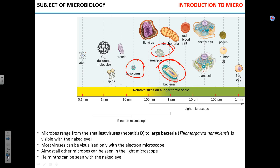Why do we talk about helminths, fungi, bacteria, and viruses all in the same course, although they are structurally different, ecologically different, and have different lifestyles? They cause disease - they are infectious. This course is mostly focused on clinically relevant microbes. Algae are hugely important in industry, but only one or two algal species cause disease in humans, so we won't talk about them much. Bacteria and viruses are hugely important for disease.